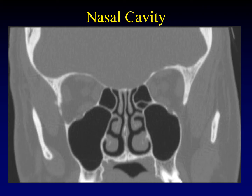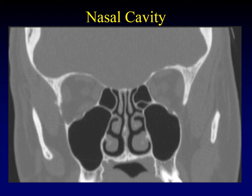Here's a coronal CT through the center of the nasal cavity. The nasal septum runs right down the center, dividing the nasal cavity in half. On each side, there are three turbinates filling the nasal cavity. Underneath each turbinate — lateral to the bulk of the turbinate — is a corresponding meatus. So we have superior, middle, and inferior turbinates, and deep to those we have superior, middle, and inferior meatuses. The floor of the nasal cavity is the hard palate, and the lateral walls are the medial walls of the maxillary sinuses. The roof of the nasal cavity is the anterior skull base.